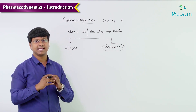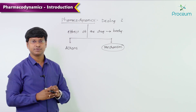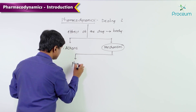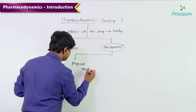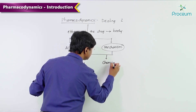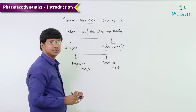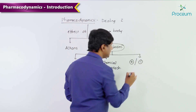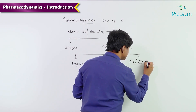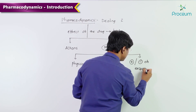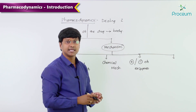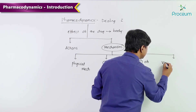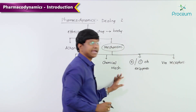These mechanisms include the physical mechanism, the chemical mechanism, stimulation or inhibition of enzymes, and lastly via the receptors. So these are the various mechanisms by which drugs act on the body.